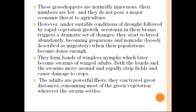These grasshoppers are normally innocuous — their numbers are low and they do not pose a major economic threat to agriculture. However, under suitable conditions of drought followed by rapid vegetation growth, serotonin in their brains triggers a dramatic set of changes and they start to breed abundantly, becoming gregarious and nomadic.